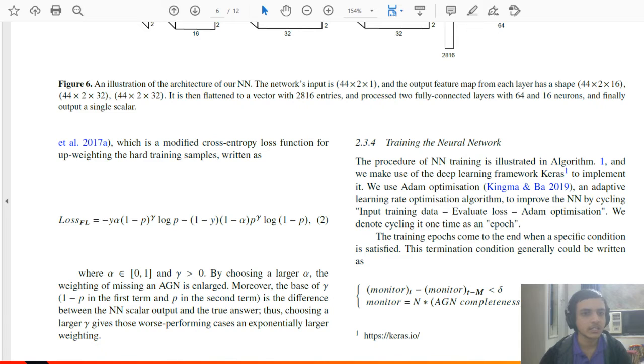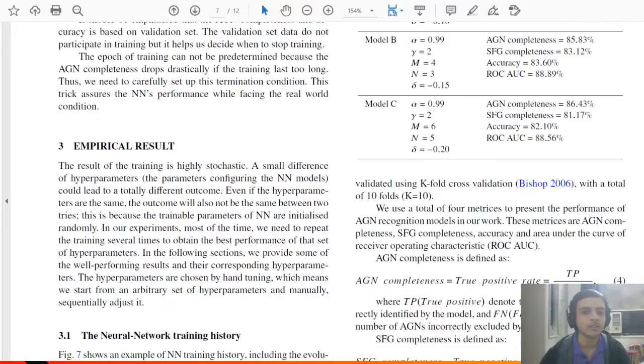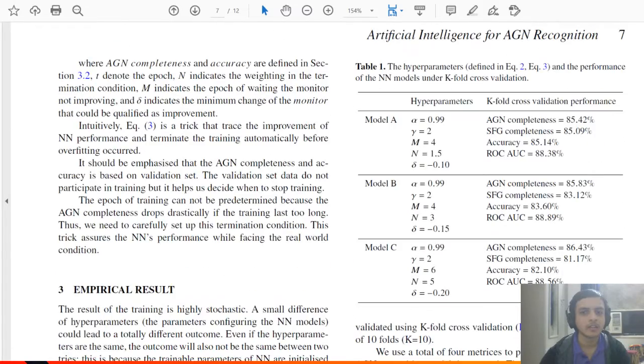This is the loss function that they try to do. All standard stuff in neural networks, but they are trying to fine tune the loss function according to AGN. How they do the training of the algorithm. They use Adam optimization, which is one of the very good algorithms that is there to find local maxima, local minima, and a lot of stuff that can be done to fine tune the neural network.